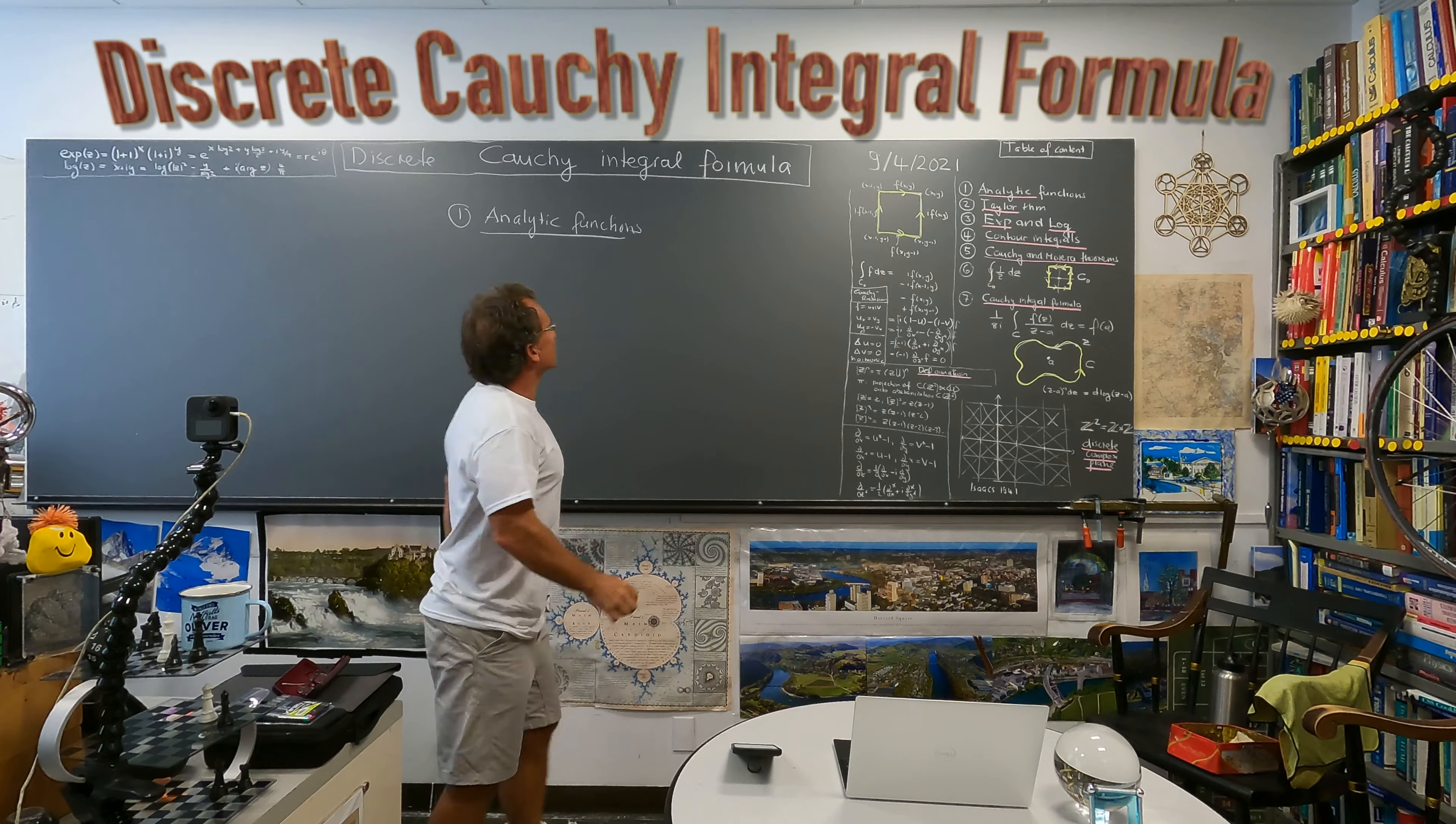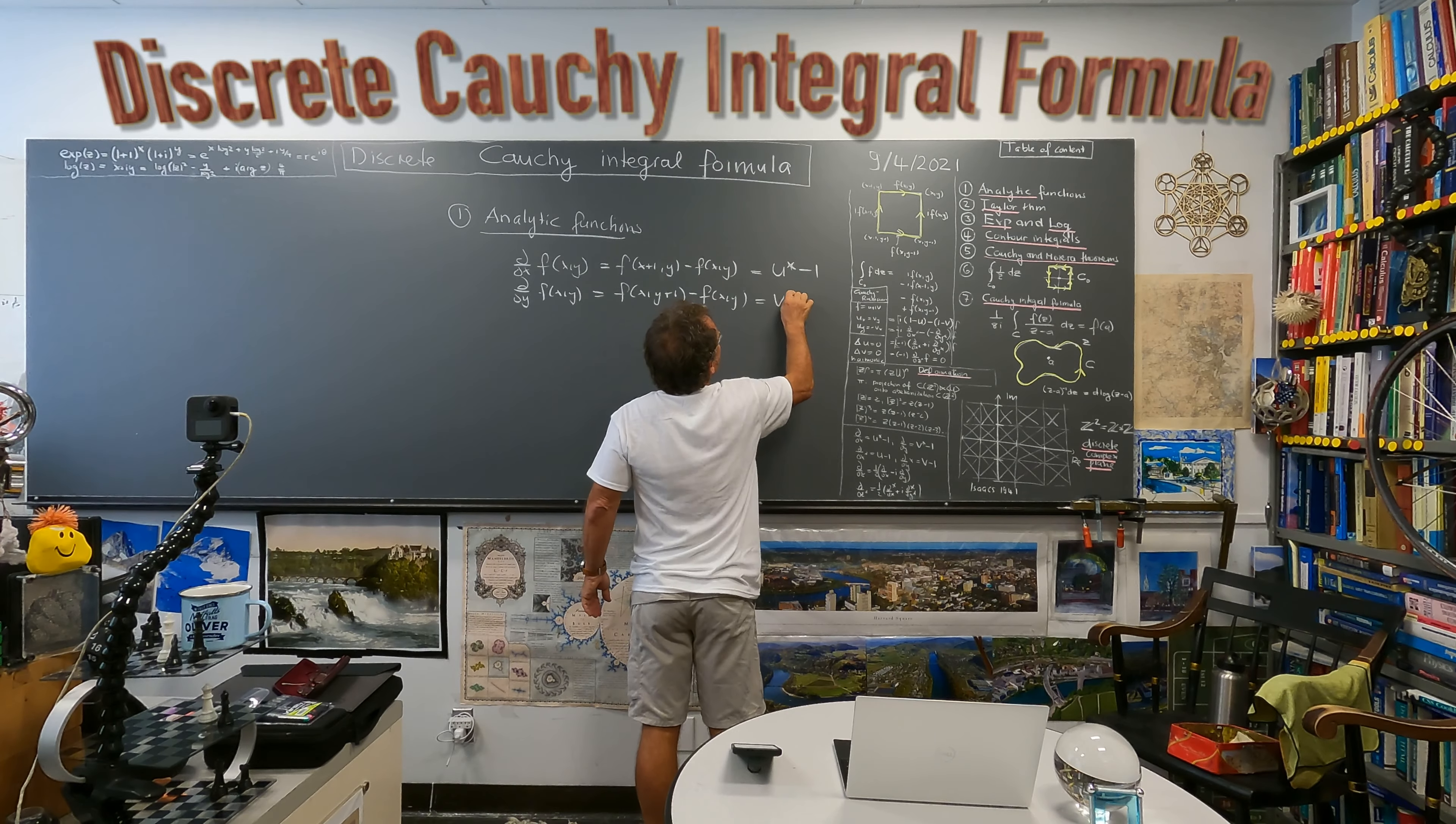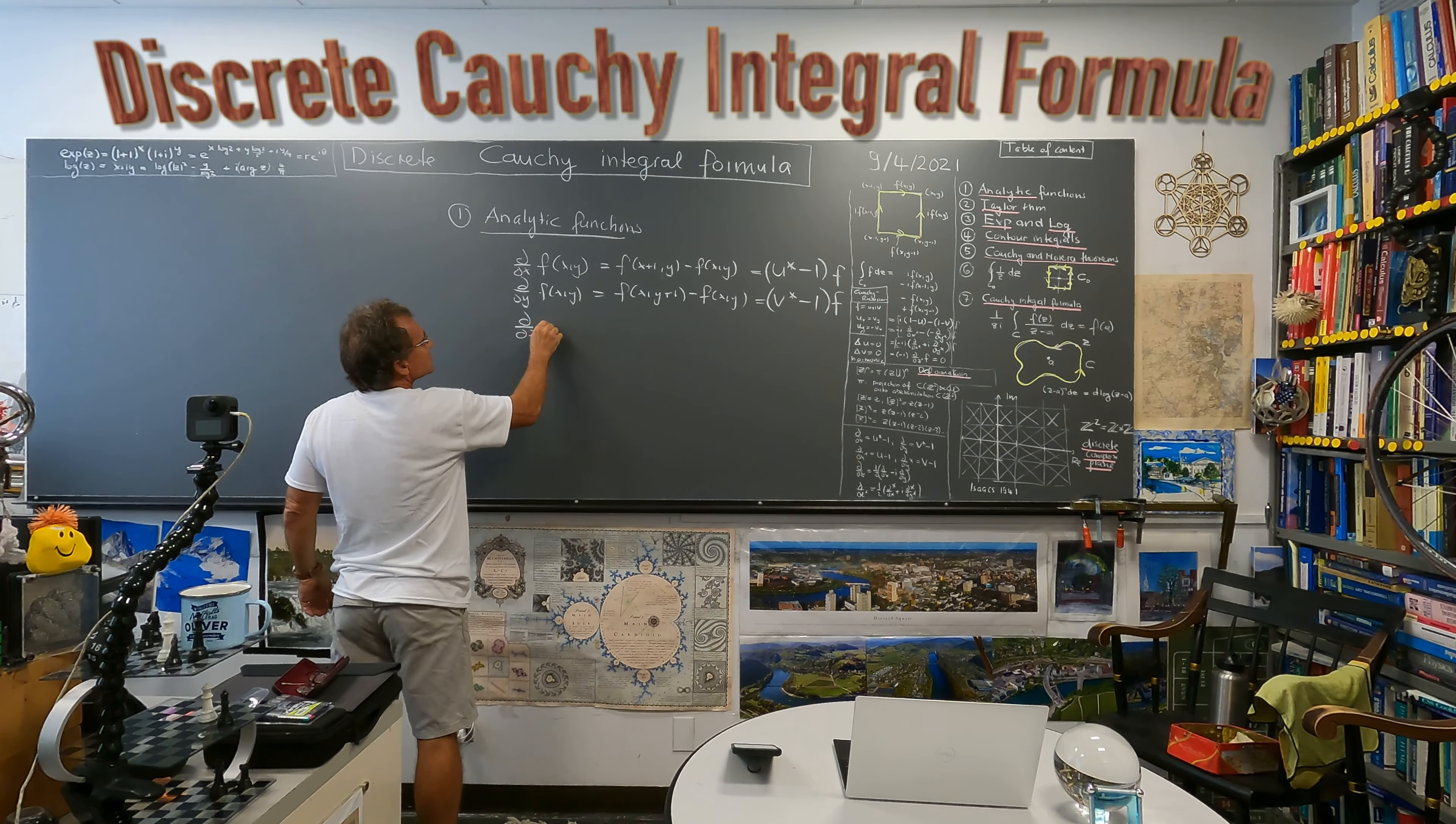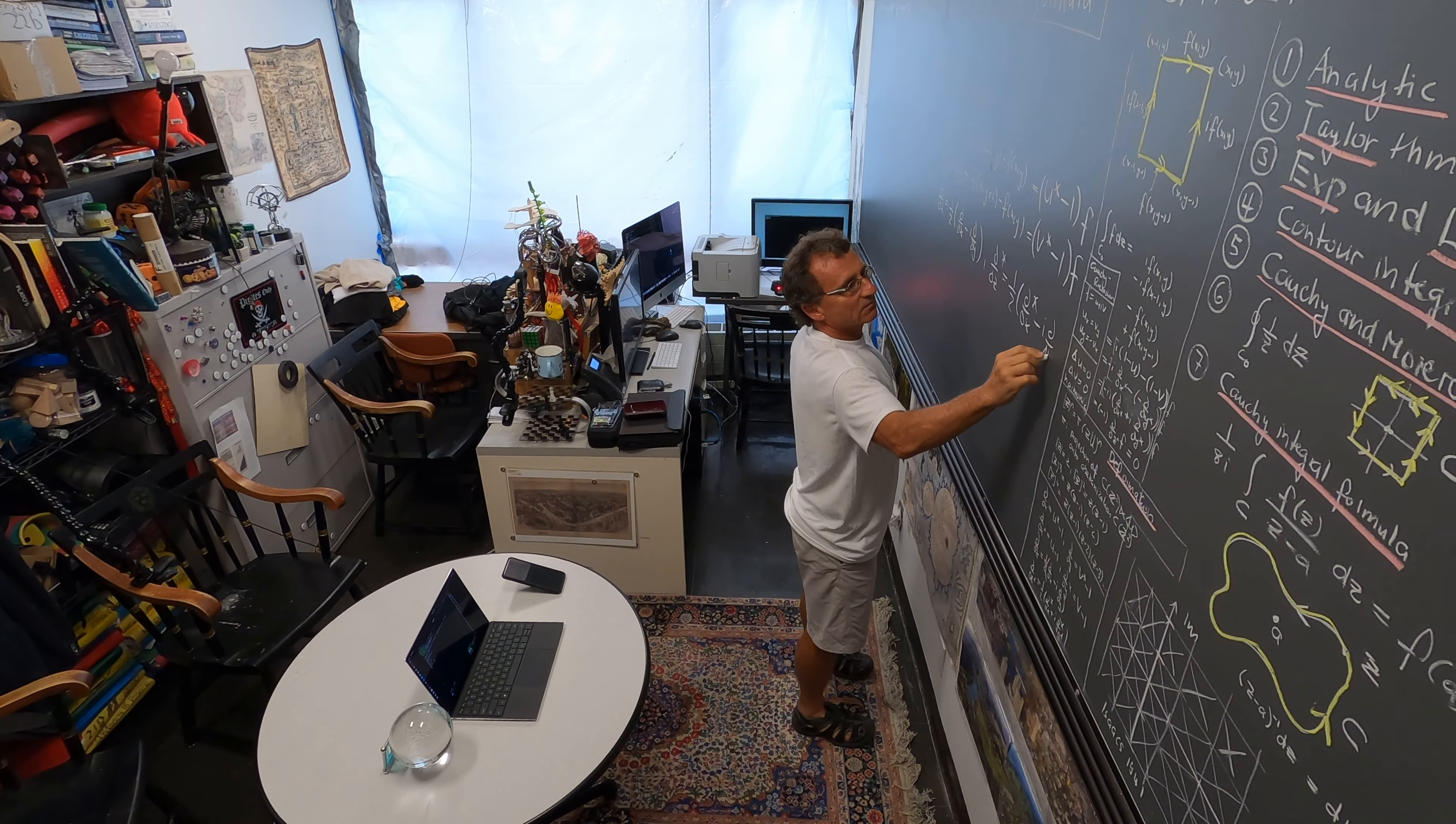So first of all we take the discrete derivatives, D over Dx, Fxy, and I just actually write it as, and last time I introduced this U, so this is actually just U star minus one, this is D star minus one of F. These are these translation operators and we have also then we can look at the adjoint, the complex derivative is just, as in the continuum, D over Dx minus iD over dy, and then we have also the conjugate operator, so this is D over Dx bar minus iD over dy bar.